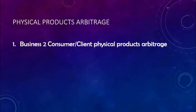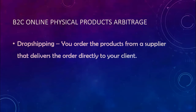Now let's move to the other type: business-to-consumer physical products arbitrage. This is the type we will be focusing on in this class, and the one I suggest you start with. The most popular form of this is drop shipping — it has an ascending trend in the last couple of years and a lot of people from around the world are using it successfully. You order products from a supplier, and the supplier delivers directly to your client.